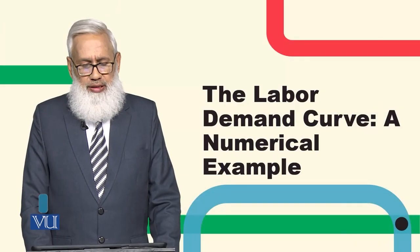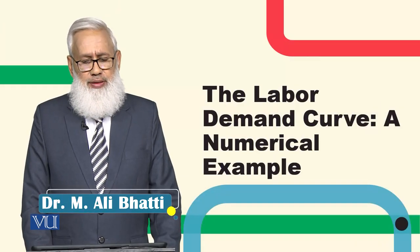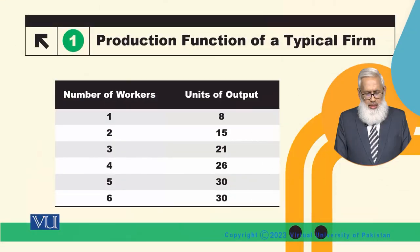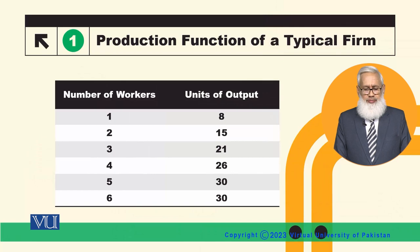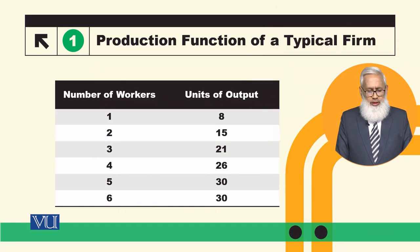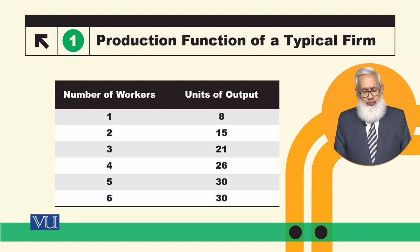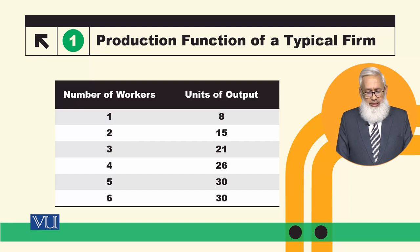Dear students, today we will understand a numerical example of what is the demand curve. We are taking a simple example of a typical firm. In the first column we have number of workers and in the second column we have units of output. So when the firm is employing the first worker, it is getting 8 units of output. Two workers, we are getting 15 units of output and so on.